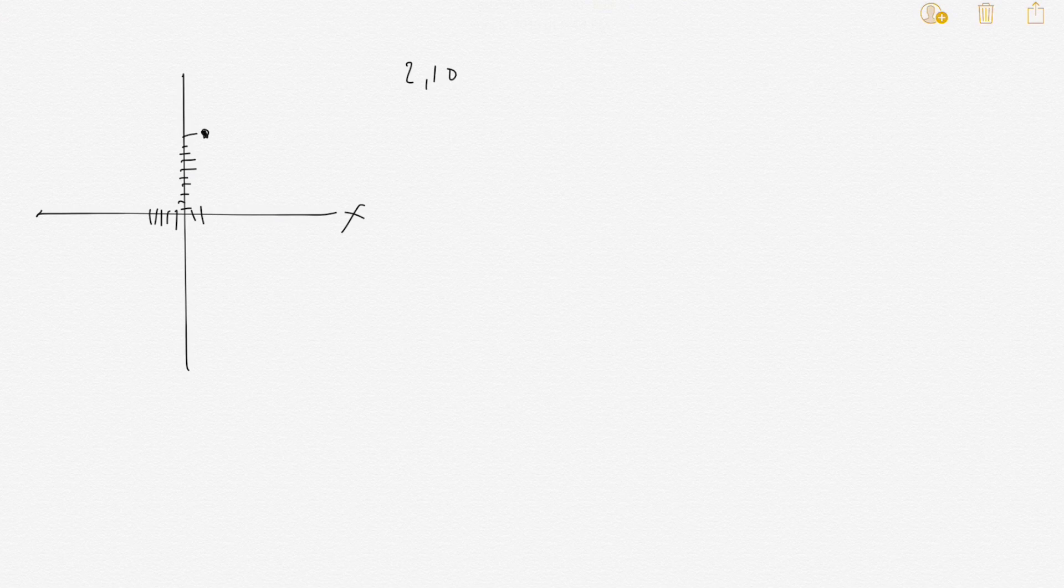The first point is (2,10). So on the x-axis we have one, two, and on the y-axis we go up 10. So that's (2,10). And then the other point was (-5,5). So the first point is (2,10) and then the other one is (-5,5). So one, two, three, four, five. It's somewhere right there.